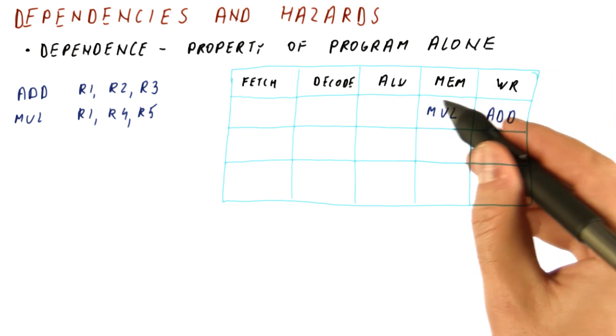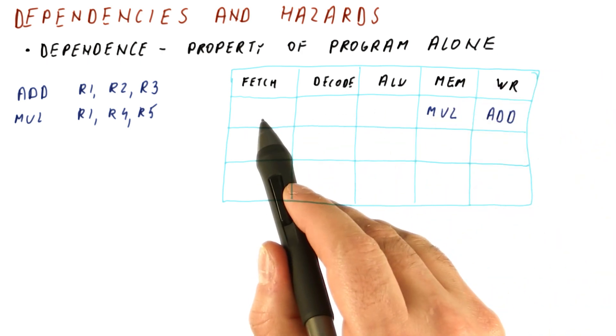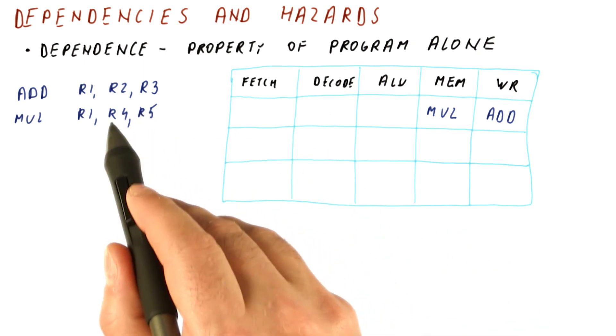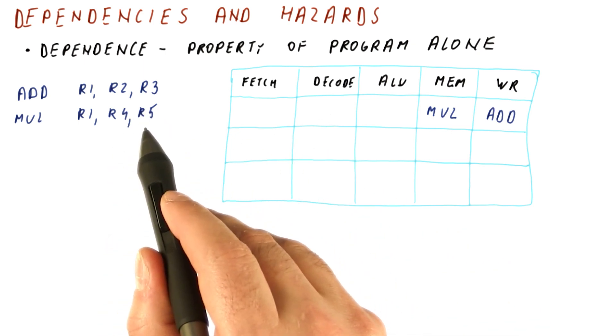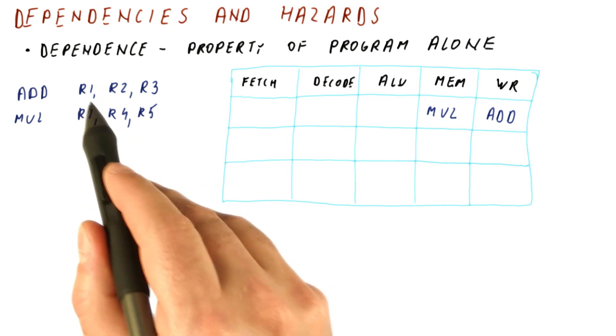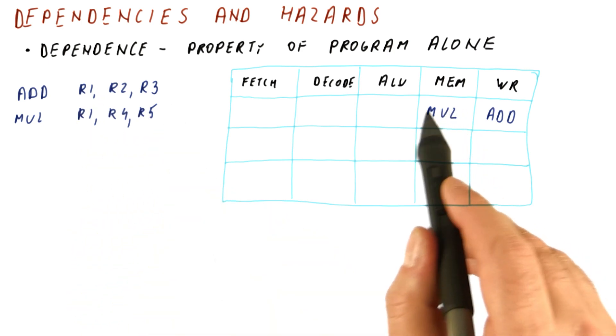At this point, the multiplication has been fetched, has been decoded, and read R4 and R5. It read the correct value because these are not affected by the add.